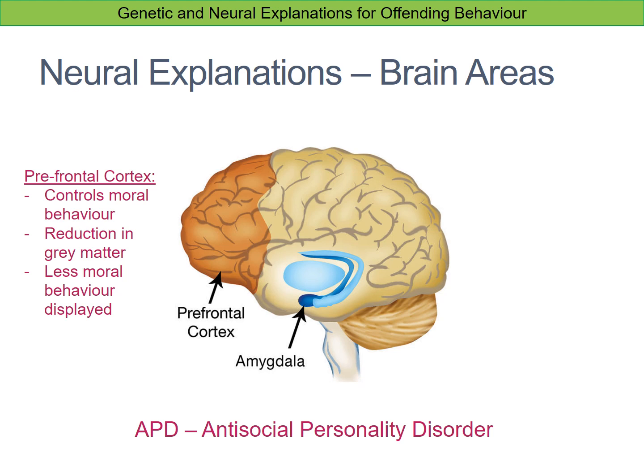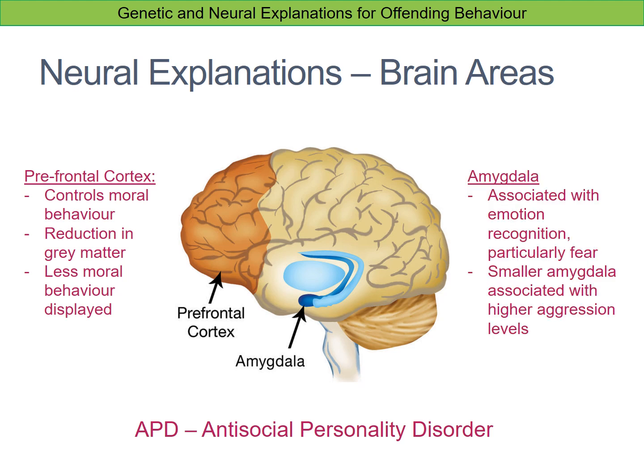The amygdala is also associated with APD. It is a small part of the brain buried right in the middle, associated with quite basic instincts like emotion recognition — particularly the recognition of fear. People with APD tend to have a smaller amygdala, which is associated with higher aggression levels. This is possibly because if an individual cannot recognize when someone is afraid, they lose that external cue telling them that the aggressive behavior they're showing is wrong in some way.